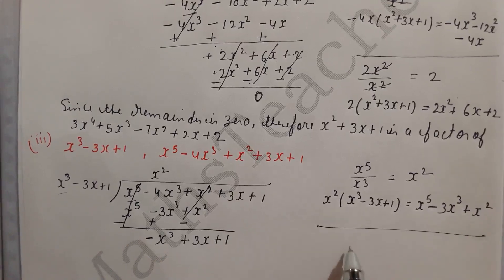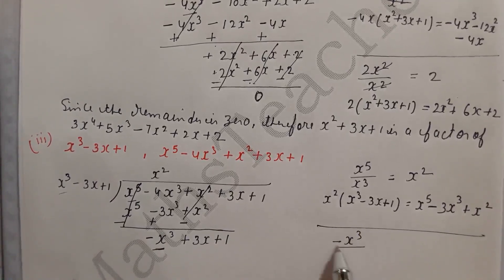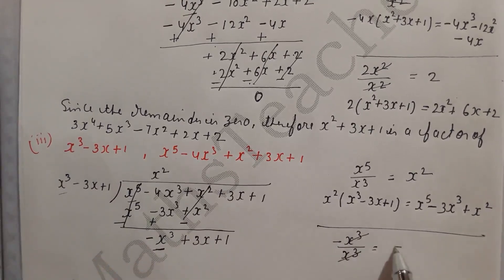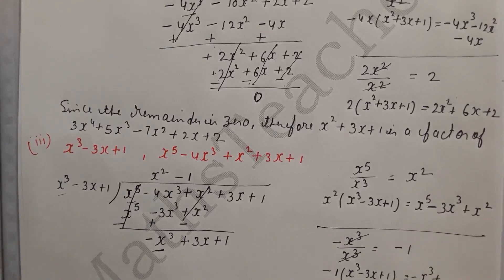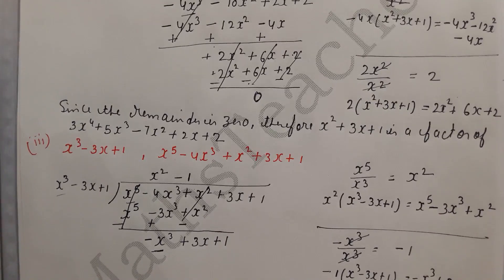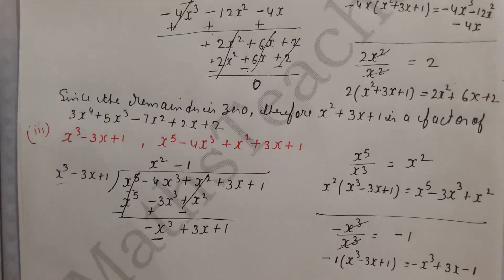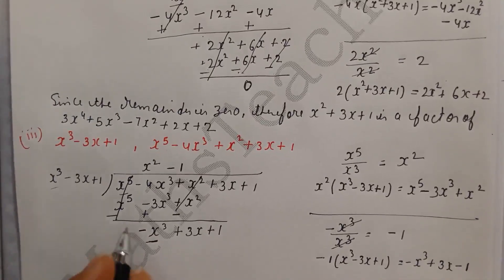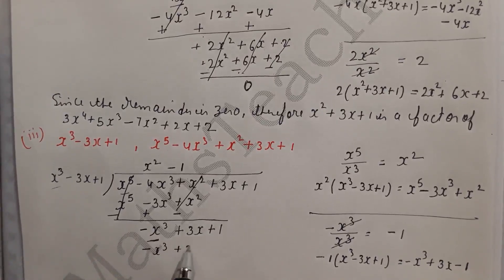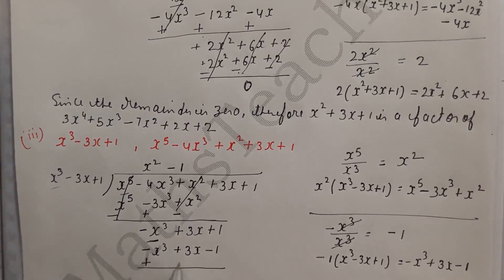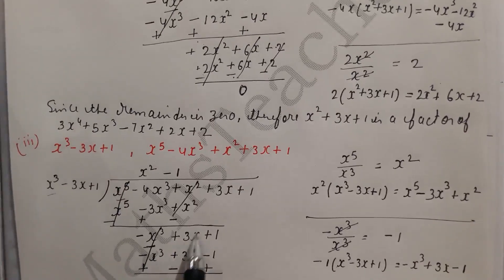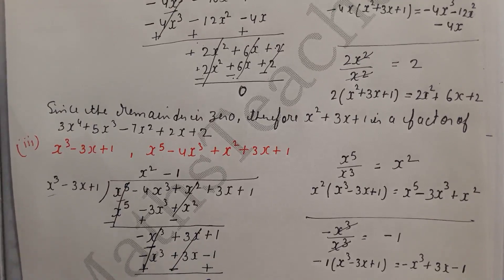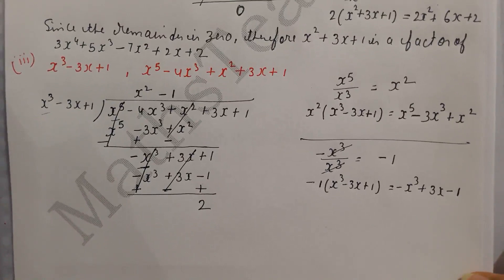After subtracting: minus 4x³ minus negative 3x³ gives minus x³, and x² minus x² cancels. We bring down the remaining terms, giving minus x³ plus 3x plus 1. Since the degrees are equal, we divide minus x³ by x³ giving quotient term minus 1. We multiply minus 1 by the divisor: minus x³ plus 3x minus 1, then change signs to get plus x³ minus 3x plus 1. After subtracting: x³ cancels, 3x cancels, and 1 plus 1 gives remainder 2.